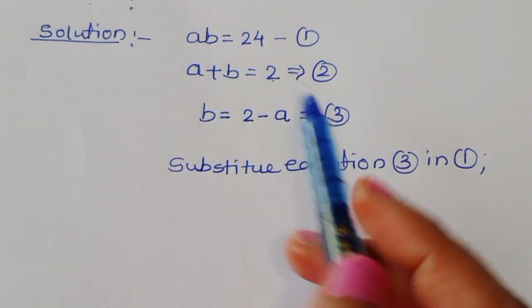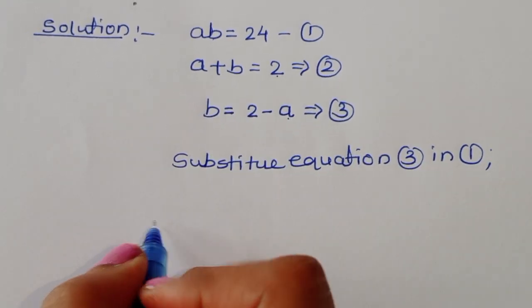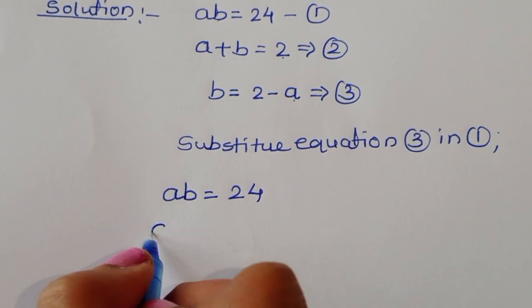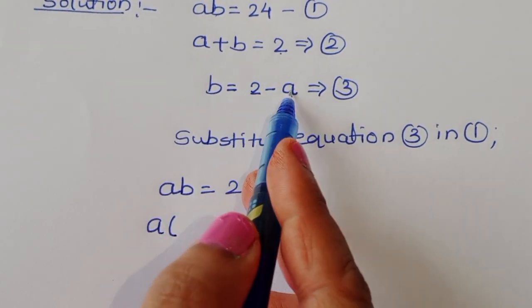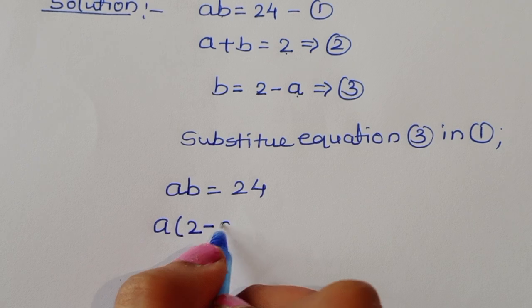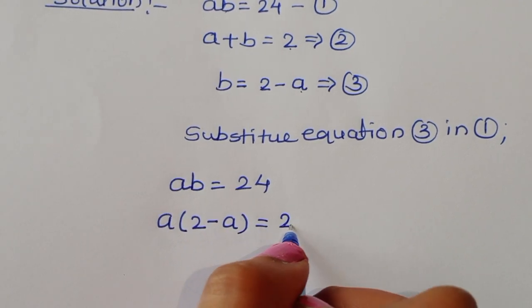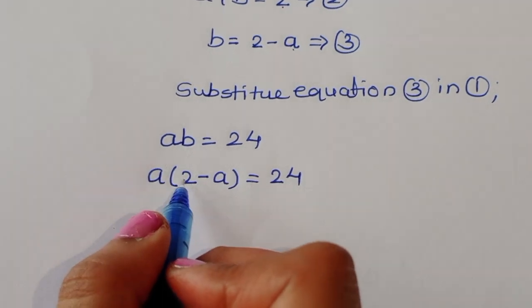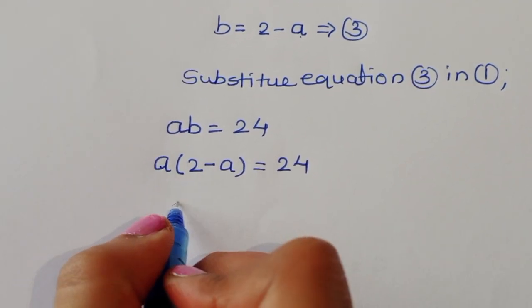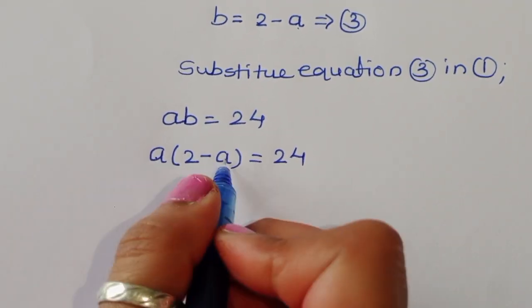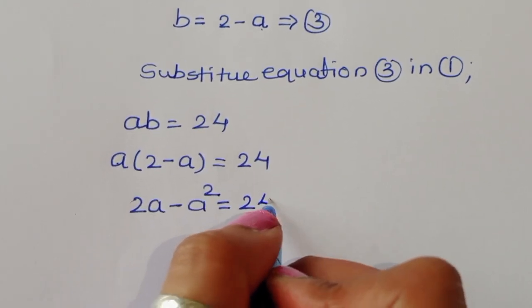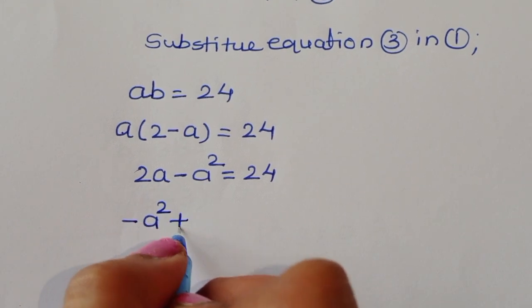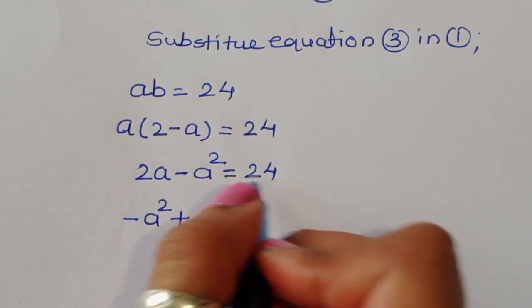Substituting into equation 1: ab = 24, so a times b, where b is 2 minus a, gives us a(2 minus a) is equal to 24. Multiplying out: 2a minus a squared is equal to 24.